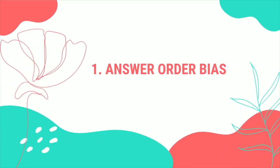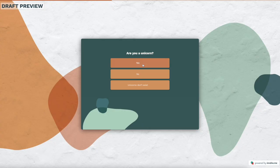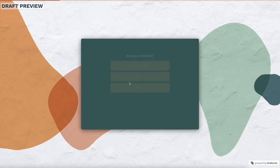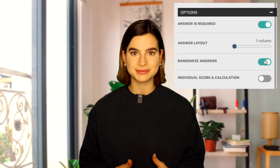Number one: answer order bias. The order in which you display your answers is very important. People are most likely to select the first one because they don't want to read and consider the other options — ain't nobody got time for that. To eliminate answer order bias, display answers in a random order each time the survey is loaded. Tools like InvolveMe can help you do this automatically.